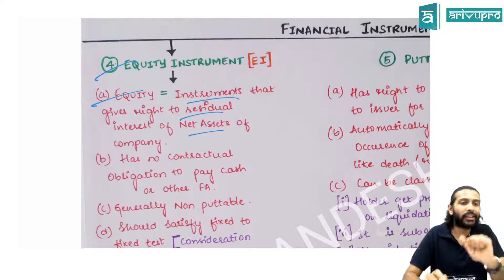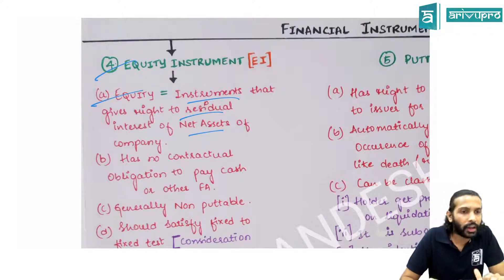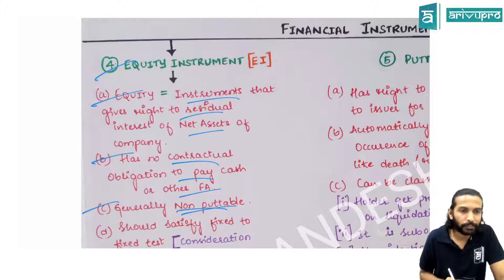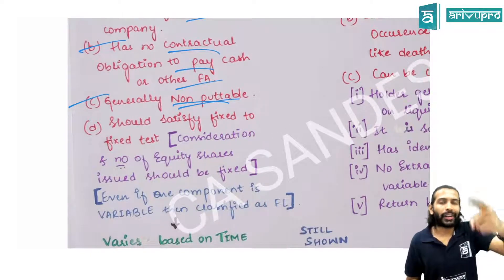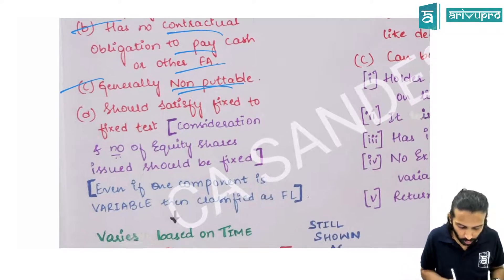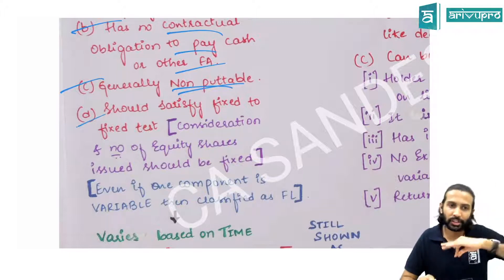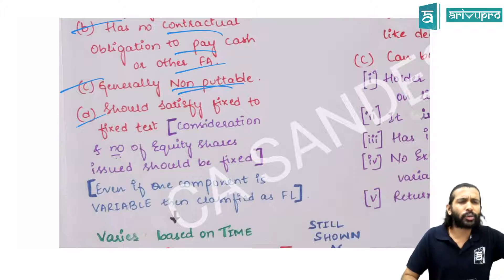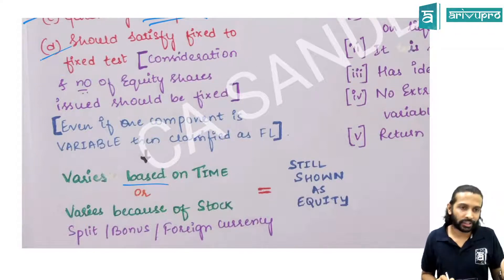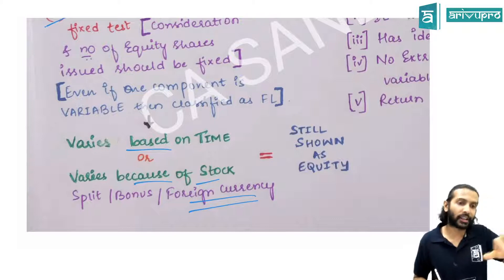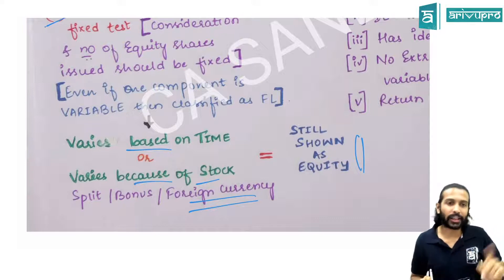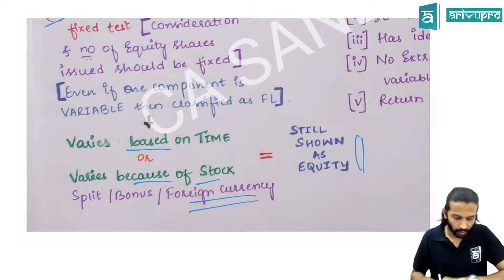Equity is an instrument that gives residual interest in the net assets of the company. There is no obligation in equity, and equity shares are generally non-putable. To classify an instrument as equity, the fix-to-fix test must be satisfied: both the consideration and the number of equity shares must be fixed. Exceptions where it still qualifies as equity: variation due to passage of time, stock split, bonus, or foreign currency.